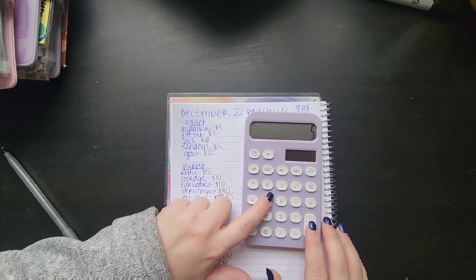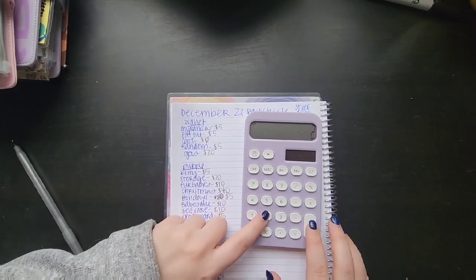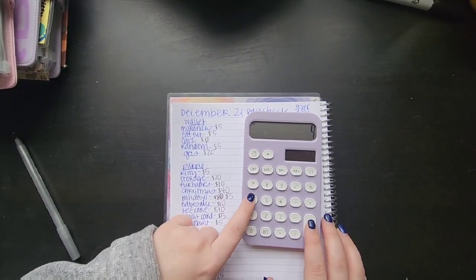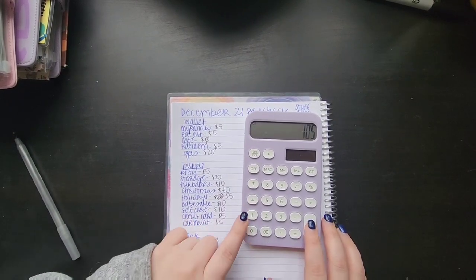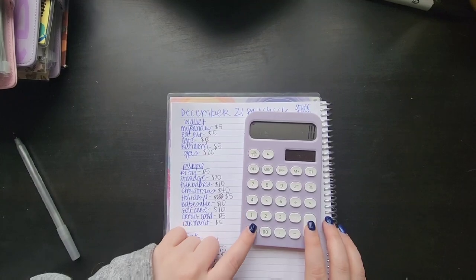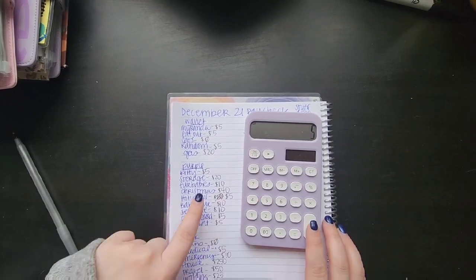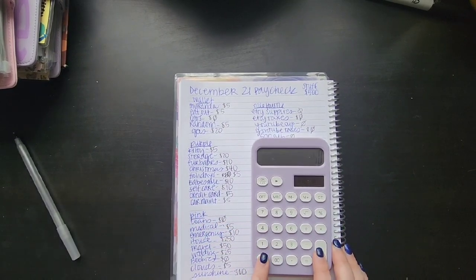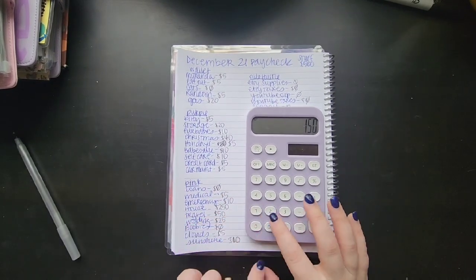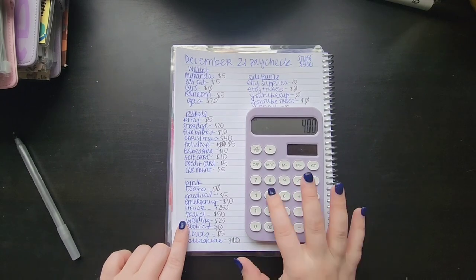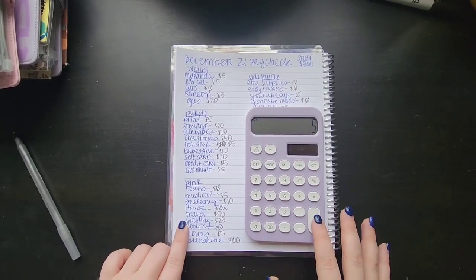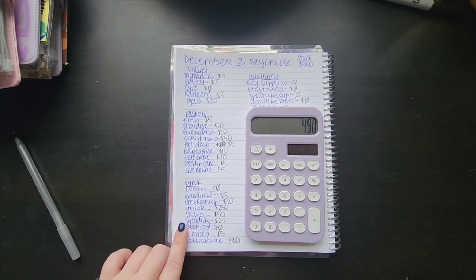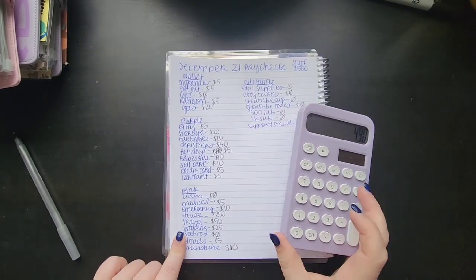So last thing to do before we wrap up this video is make sure I did my math right. So we don't need to worry about these. So five plus five plus five plus 20, five plus 20 plus 10 plus 40 plus 5 plus 10 plus 10 plus 5 plus 5 plus 10 plus 250 plus 50 plus 25 plus 5 plus 10. Why am I 10 off? Did I make mistakes somewhere, probably?